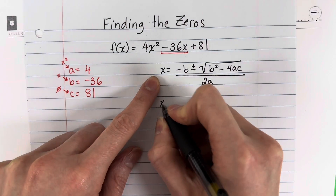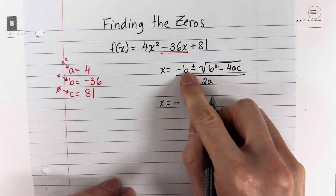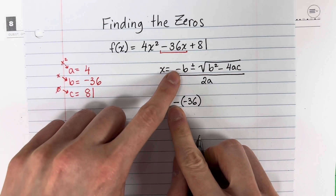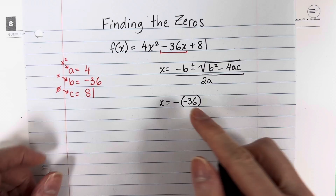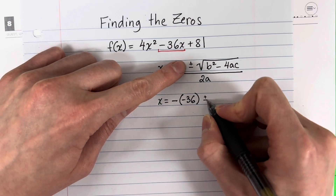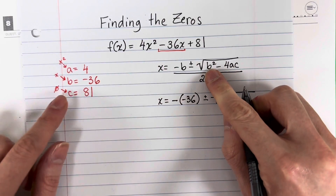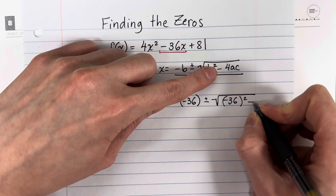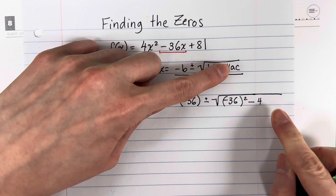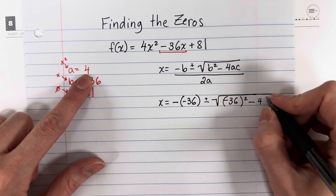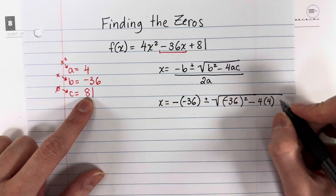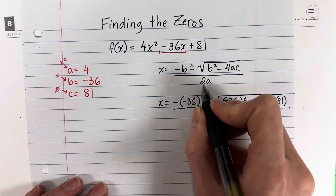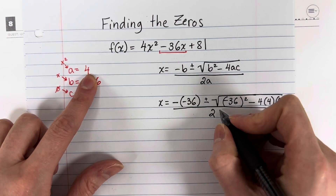So x equals negative b — b is negative 36, so in parentheses that gives us negative of negative 36. The first negative is from the formula; the second is from negative 36. Then plus or minus square root of b squared, which is negative 36 in parentheses squared, minus 4 times a, which is 4, times c, which is 81. All divided by 2 times a, which is 4.